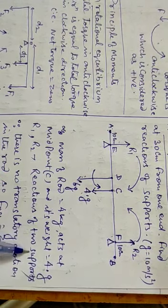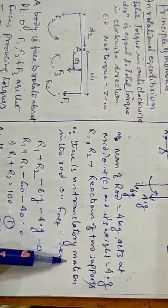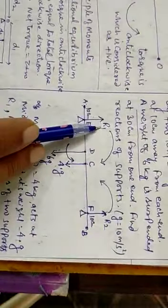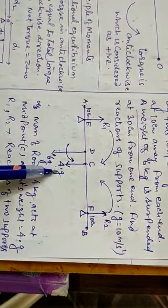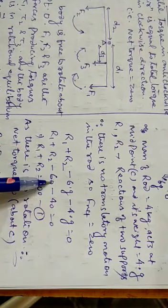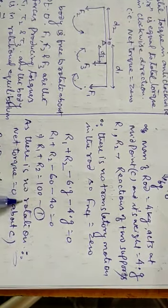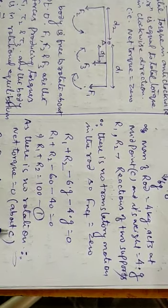R1 and R2 are the reactions. Since there is no translatory motion in the rod, F_net is equal to zero. Two forces are on the top and two are on the bottom — upward positive, downward negative. Use g = 10. If there is no rotation, then the net torque is also zero.